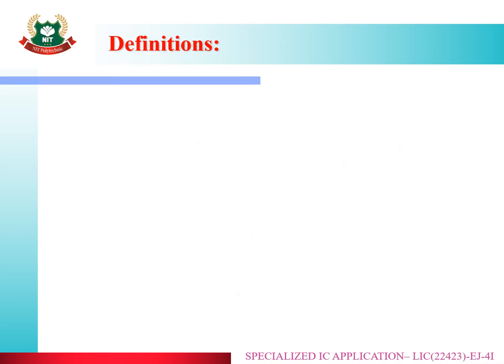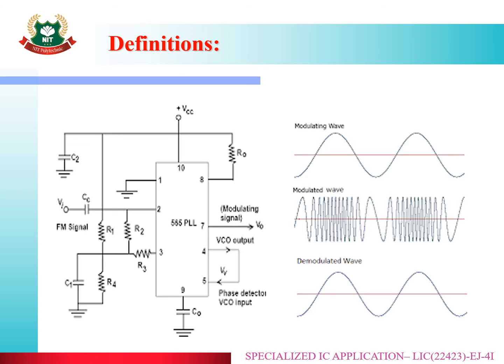The circuit diagram uses IC 565, which is the PLL IC, used to design different applications of PLL. You have to connect the particular components to that IC. To perform demodulation, you connect the carrier signal along with the original signal to the demodulator. This is the waveform of that particular FM demodulator.